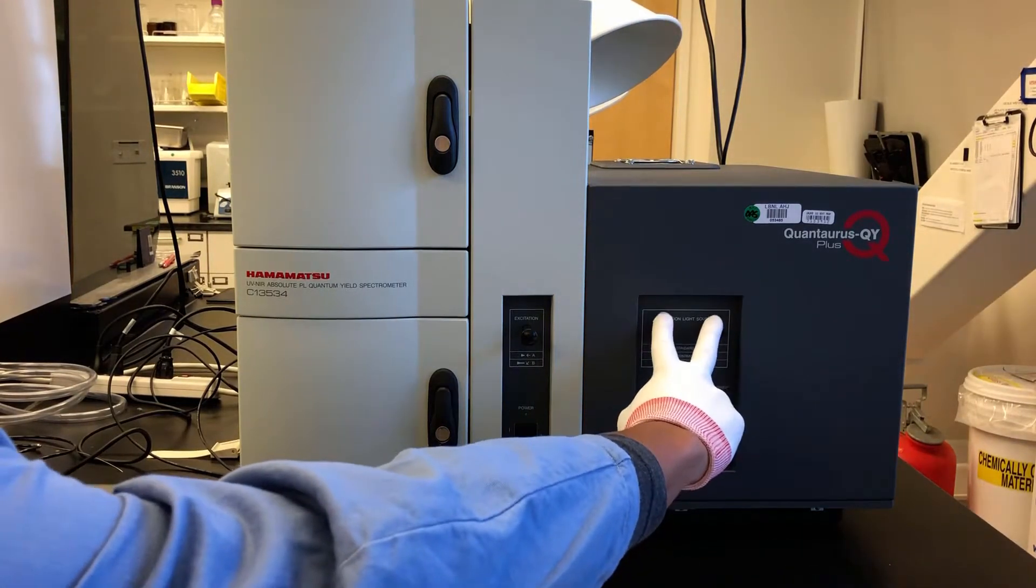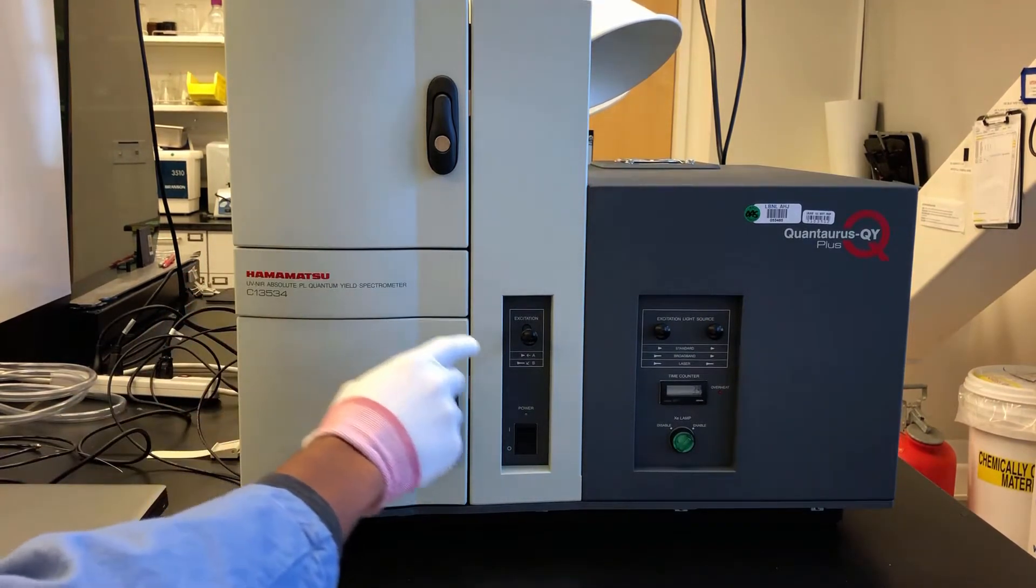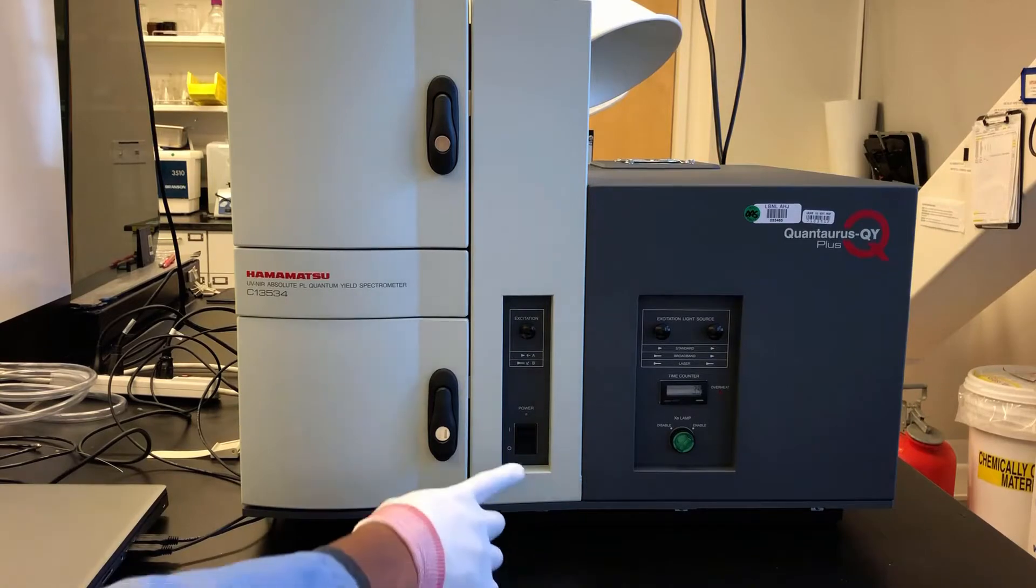To start, press these two knobs on the right to choose the monochrometer. We'll be loading the top chamber so I'll choose excitation source A. Then press the power button.